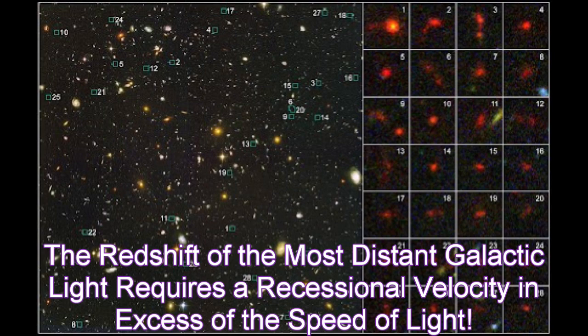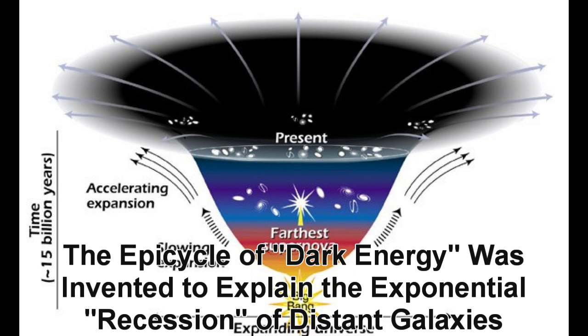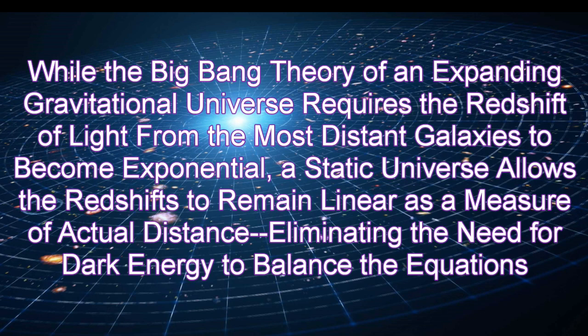The redshift of the most distant galactic light requires a recessional velocity in excess of the speed of light. The epicycle of dark energy was invented to explain the exponential recession of distant galaxies. While the Big Bang theory of an expanding gravitational universe requires the redshift of light from the most distant galaxies to become exponential, a static universe allows the redshift to remain linear as a measure of actual distance, eliminating the need for dark energy to balance the equations.